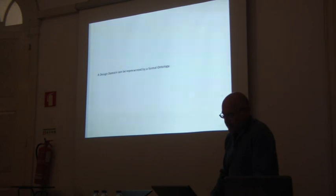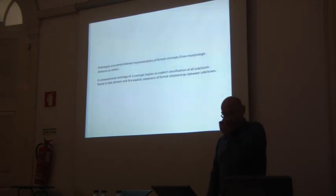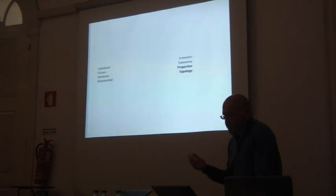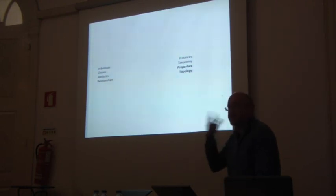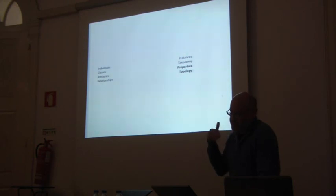Basically, we're talking about an ontology — the representation of a design domain through a formal ontology. Ontologies are computational representations of formal concepts. It implies an explicit classification of all subclasses found in that design domain and the explicit statement of formal relationships between subclasses. In an ontology we have individuals, which are instances; we have classes, which form a taxonomic structure of that design domain; they have attributes, meaning properties of each class or instance; and we should establish the relationships between all these classes in an explicit form.